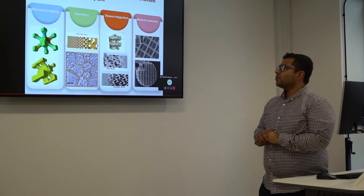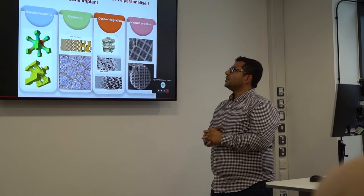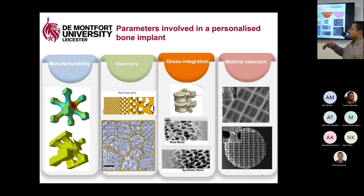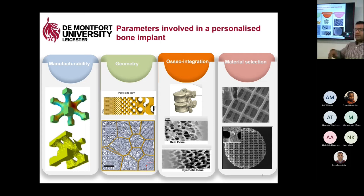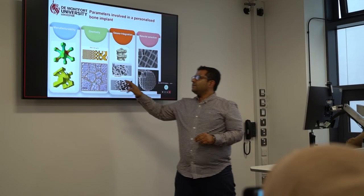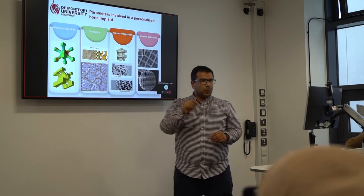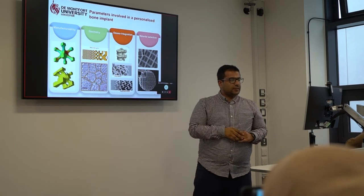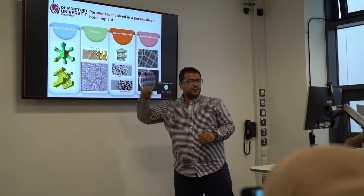There are four important parameters for personalized bone implants: manufacturability, geometry, integration, and material selection. Different parts can be addressed in different fields of study, but what we are focusing on here is geometry — specifically, some mechanical properties of the bone like porosity, shear modulus, and Young's modulus, because bone is a porous material.